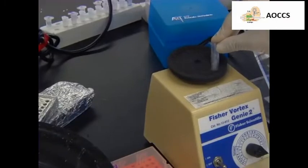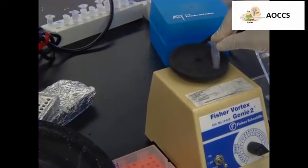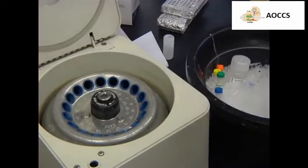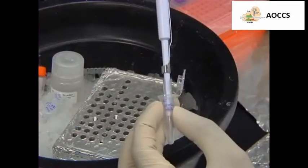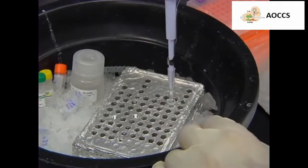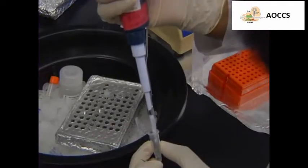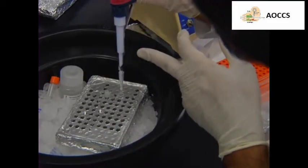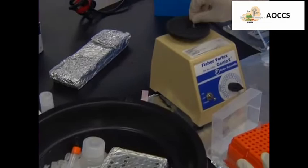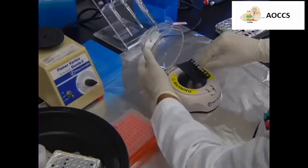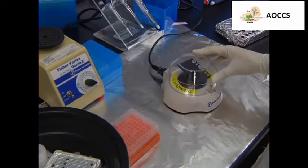Next, mix the working solution by vortexing it for 1-2 seconds at maximum speed. Briefly spin down the solution for 10 seconds, and then dispense the working solution into nuclease-free PCR tubes. Then, add the template RNA directly into the PCR tubes. Gently vortex the reaction for 1-2 seconds to ensure that all of the reagents are thoroughly mixed, and spin down the tubes for 10 seconds.